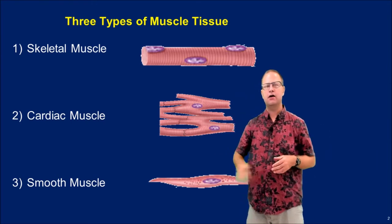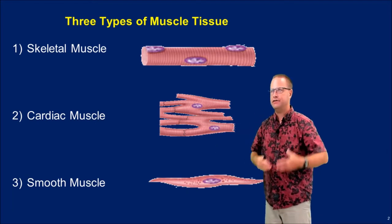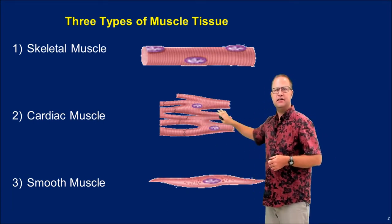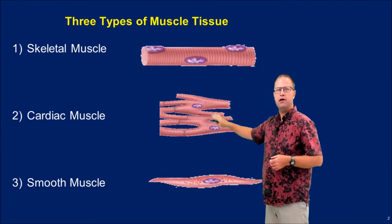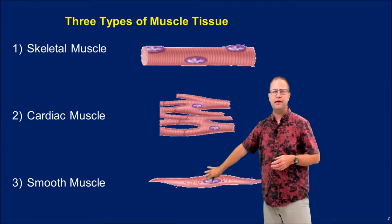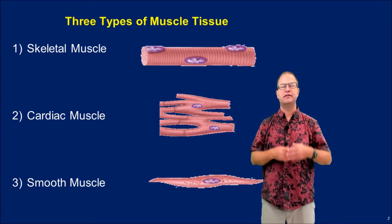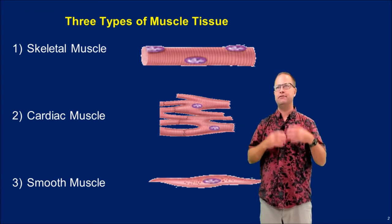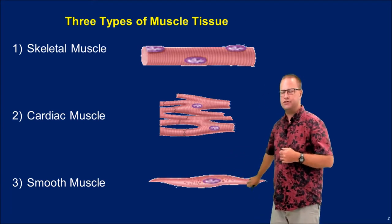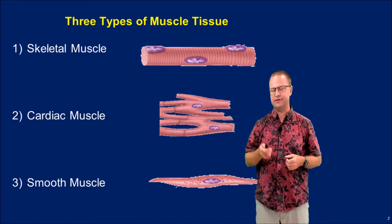In contrast, cardiac muscle is found in the heart, and it is involuntary — we can't voluntarily contract our heart. The cells are also striated, but they're smaller and only have one to two nuclei. Smooth muscle is found primarily in blood vessels and the intestine. It is also involuntary, and because it's smooth, it has no striations. Smooth muscle helps to propel food through the digestive tract.